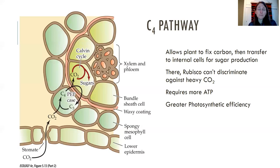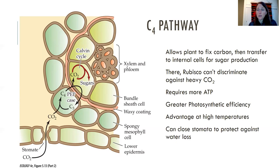This C4 pathway requires more ATP, but it is more efficient in terms of photosynthesis, and these plants are at an advantage under high temperatures and low water. They tolerate drought stress much better and they can close their stomata against water loss.